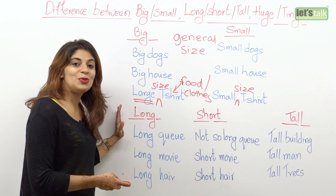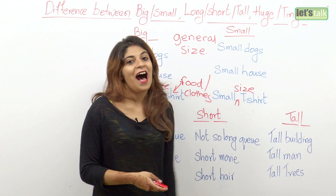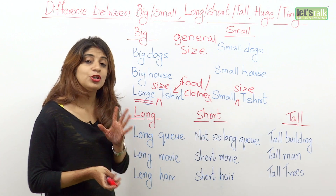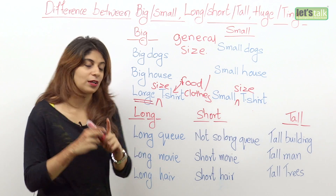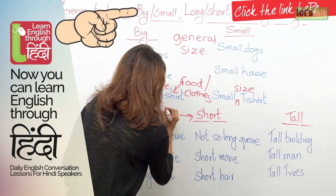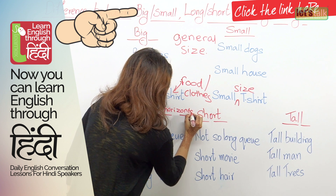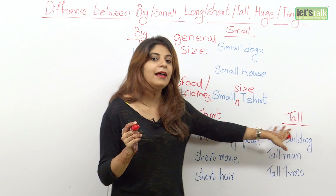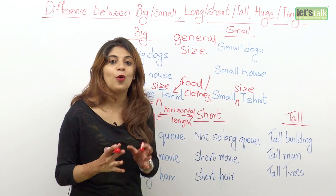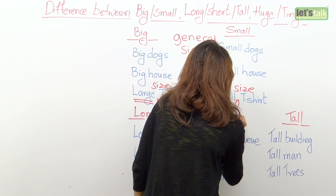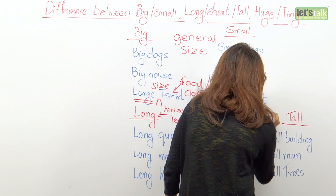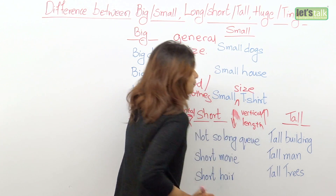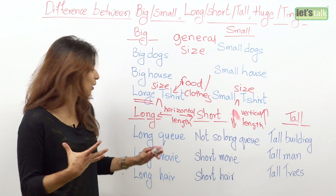Now let's move on to the words long, short, and tall. We use long and short to talk about length — specifically horizontal length — whereas we use the word tall, and its opposite short, when talking about vertical length. Let's understand the difference and look at some examples.